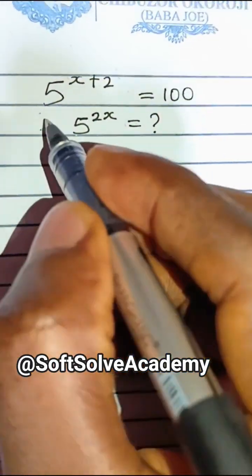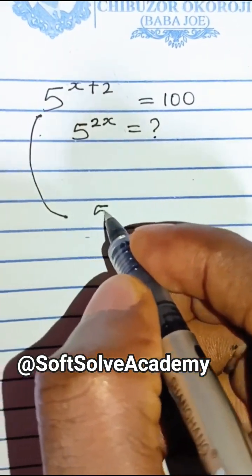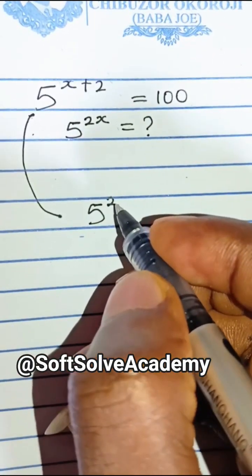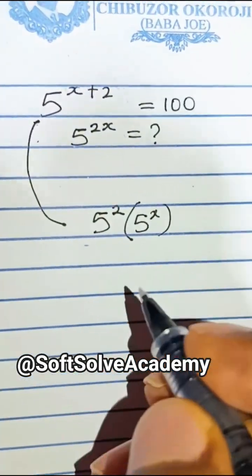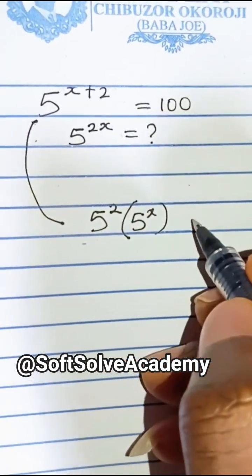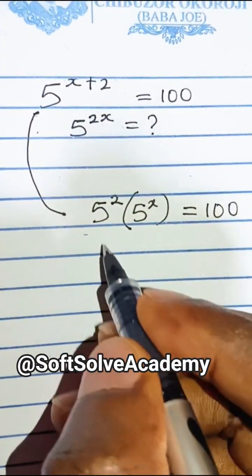To solve this, convert it to 5 to the power of 2, times 5 to the power of x. The bases are the same, and that should equal 100.